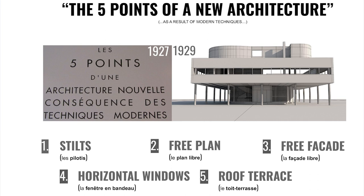The first point was stilts: engineering now existed so that the entire building could be elevated off the ground, almost to a monumental level, freeing up the ground territory. The second was the free plan — architects needn't design rooms based on standard load-bearing spans. They could now explore very large or very small spaces within spaces, freeing up the plan.